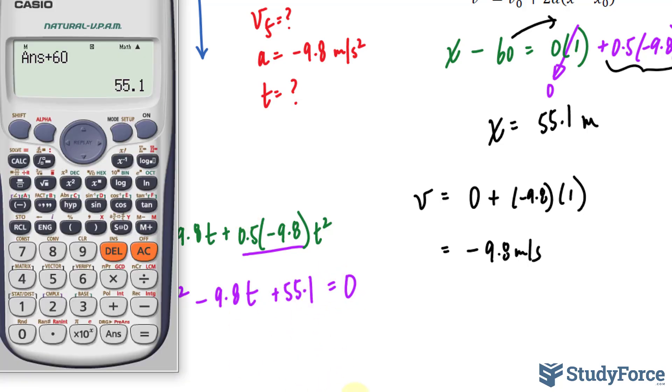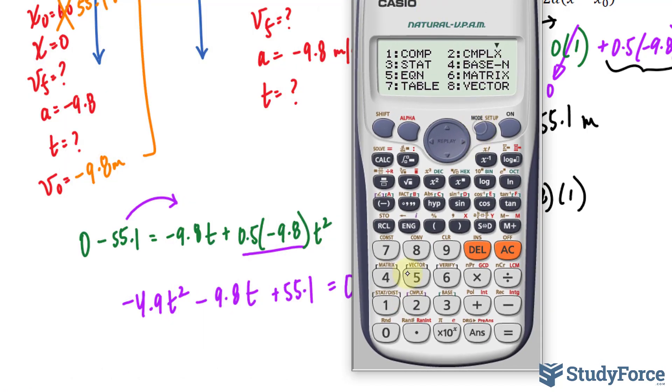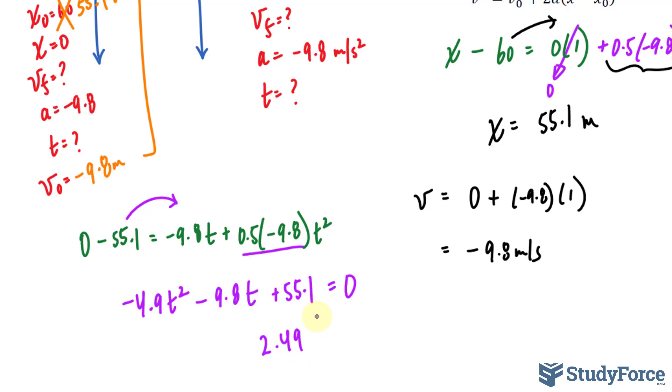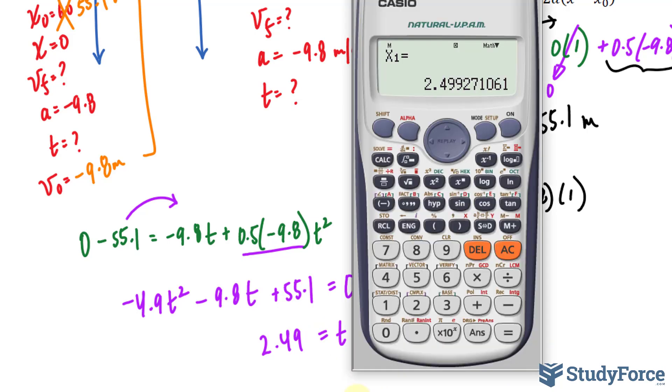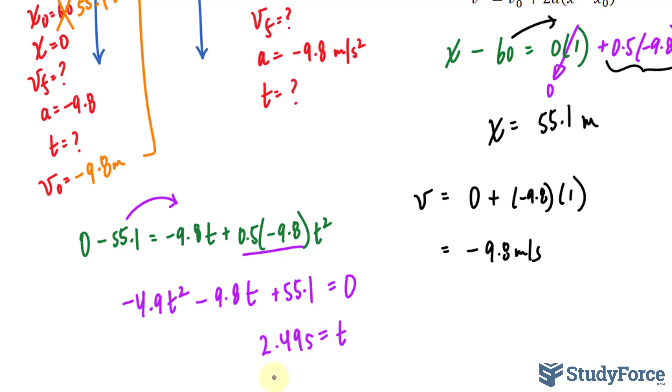At this point, you should be using the quadratic formula, but if you have this feature on your calculator, you can do it on your calculator. Negative 4.9, negative 9.8, 55.1. So we'll get two t values. The first one is 2.49, that's the time it takes coconut one to reach the ground, therefore coconut two. And the other t value happens to be negative, so we can't use this. We'll only be using 2.49.